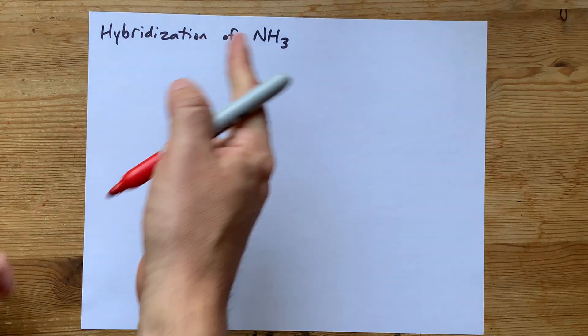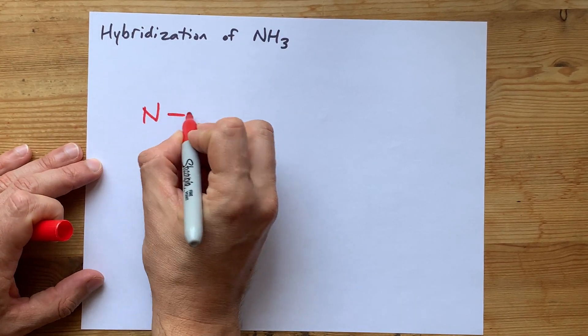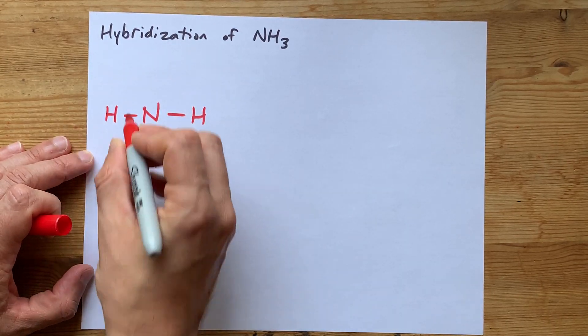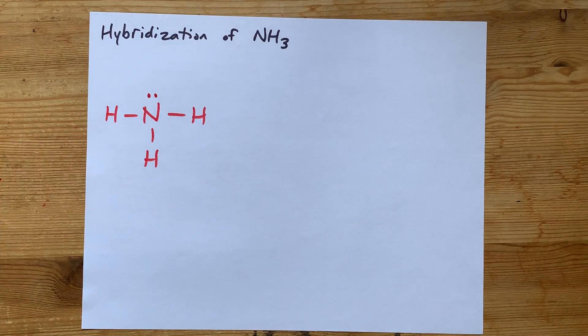What's the hybridization of NH3? Well, if we draw the Lewis structure, it's simply a nitrogen single bonded to each of three hydrogens, and it has a lone pair.